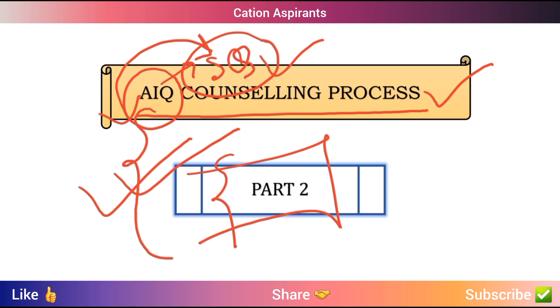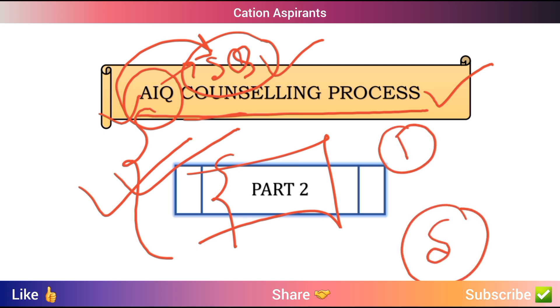All India NEET Counseling has four rounds: Round 1, Round 2, Round 3, and the Mop-Up Round. There is also the Stray Vacancy Round Counseling. In Part 1, we will start with the Stray Vacancy Round Counseling process.